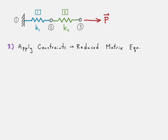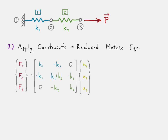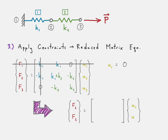Now we're going to apply the constraints to create our reduced matrix equation. That's our global stiffness matrix. We know that the displacement at node one must be zero due to the constraint at node one. So we remove the column and the row that corresponds to that constrained degree of freedom. That creates our reduced stiffness matrix equation. We can remove the column because anything times zero is zero. We remove the row because it contains the unknown force. When we do that, we get our reduced matrix equation.